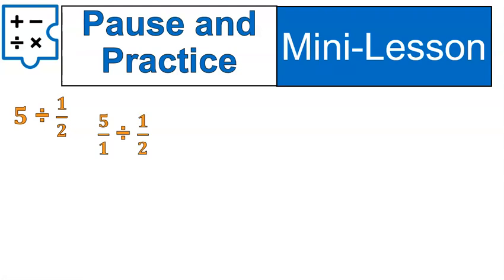Step number 1. 5 becomes 5 over 1. Did you get that? Again, all you did was make 5 into 5 over 1. What's our next step?